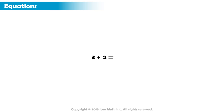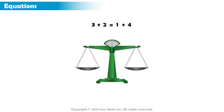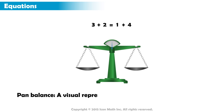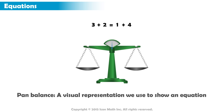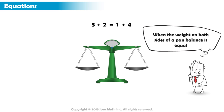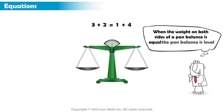Let's begin with the equation 3 plus 2 equals 1 plus 4. We will represent this equation on a pan balance. A pan balance is a visual representation we use to show an equation. When the weight on both sides of a pan balance is the same or equal, the pan balance is level.